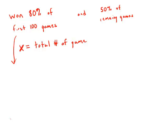So in the first 100 games, they win 80% of their games, so they win 80 games. The remaining games, that would be the total number minus 100. In those remaining games, they won 50% of the games. So that is 0.5 times X minus 100.